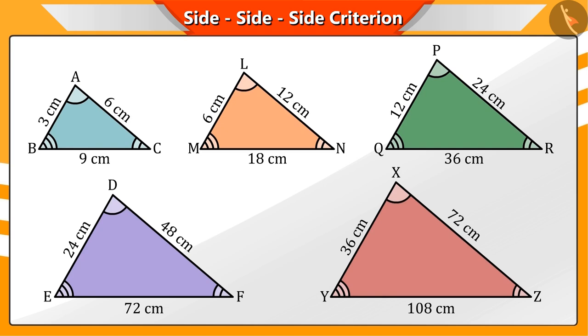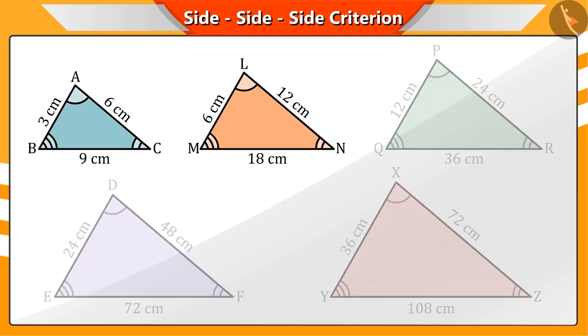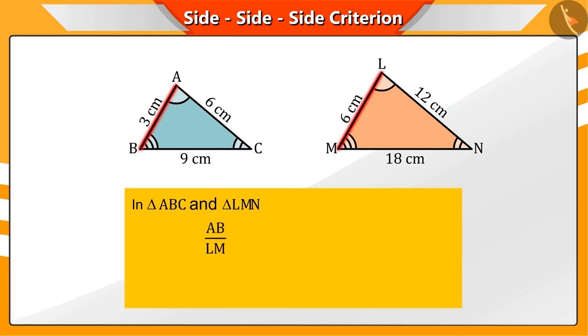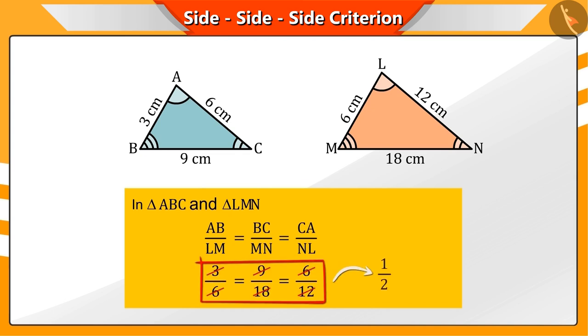To understand this, we will take triangles ABC and LMN. What do you understand by these two triangles? If we look carefully, corresponding sides AB/LM, BC/MN and CA/NL, their ratios are equal to 1 by 2.